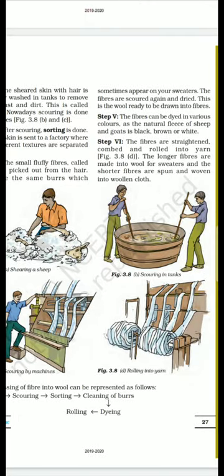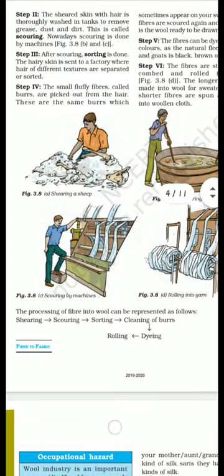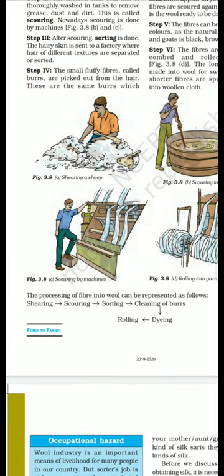The process of turning fiber into wool can be represented as follows: first is shearing, which means removing wool from the animal's body; then scouring, sorting, cleaning, dyeing, and finally rolling into yarn.